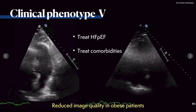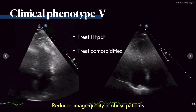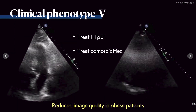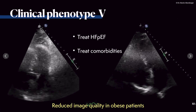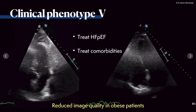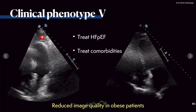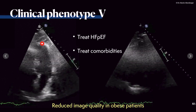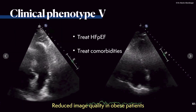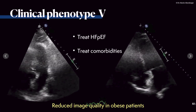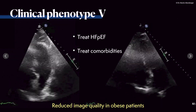What can we do with clinical phenotype 5? Now we can treat heart failure with preserved ejection fraction and also treat the comorbidities. This is an example of an obese patient. We see a lot of fatty tissue, also in the pericardium and around the heart. There is a definite reduction in image quality, which is a huge problem with obese patients.